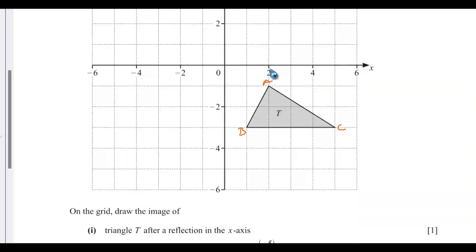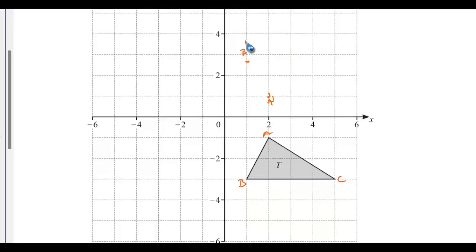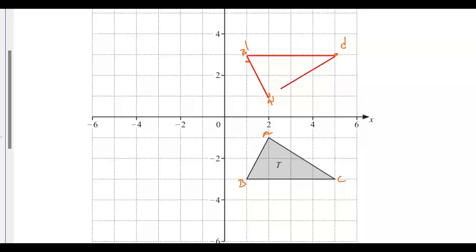For point A, we count 1 step to the x-axis, so we place A' on the other side 1 step away. For point B, we count 3 steps to the x-axis, so B' is placed 3 steps on the other side. For point C, it will be on the same level as B' — 3 steps from the x-axis, giving us C'. We then connect A', B', and C' together to form the image of triangle T.